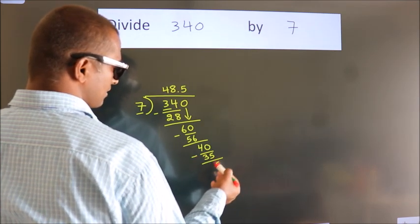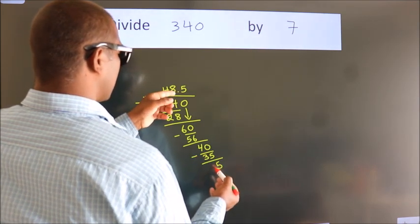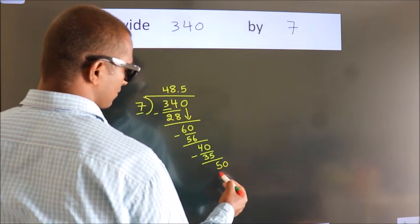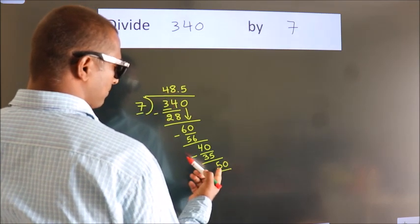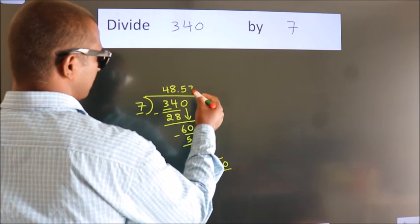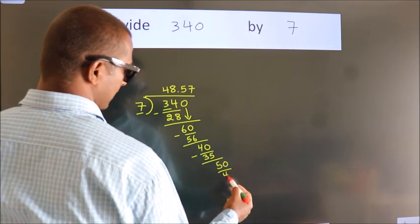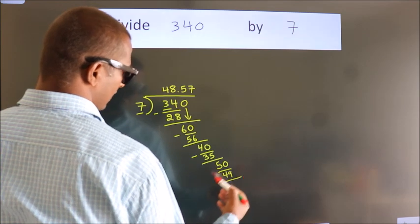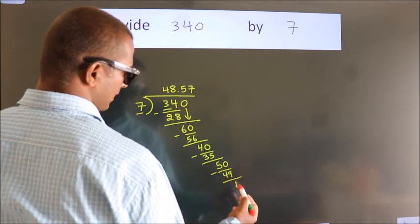After this we already have the decimal, so directly take 0. So 50. A number close to 50 in the 7 table is 7 sevens, 49. Now we subtract. We get 1.